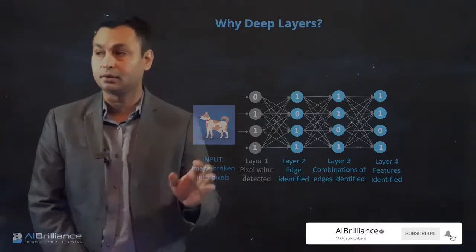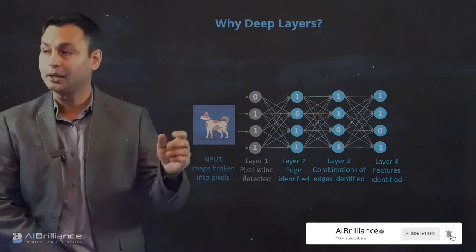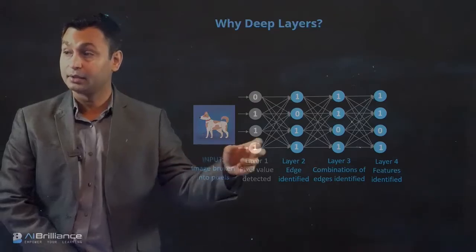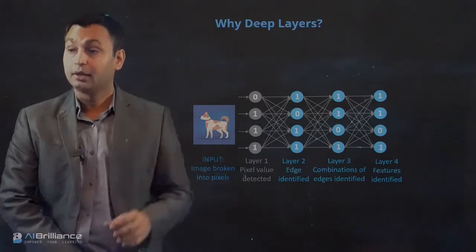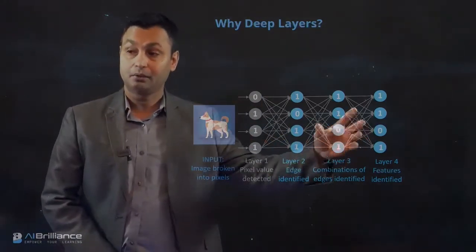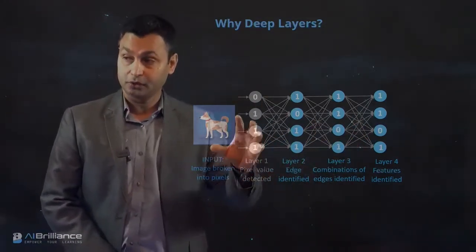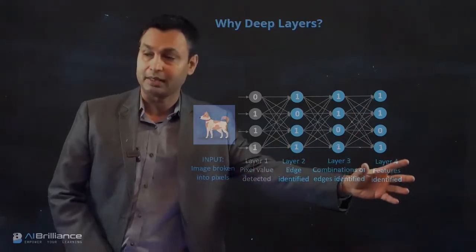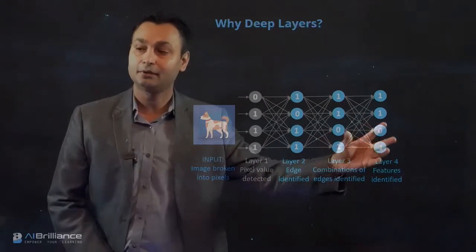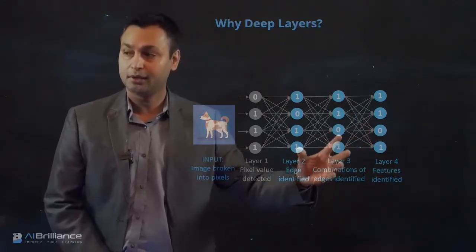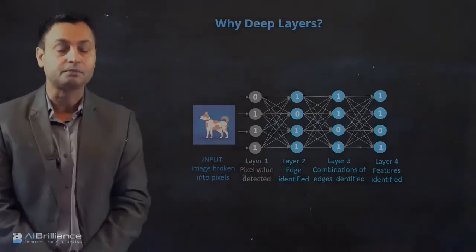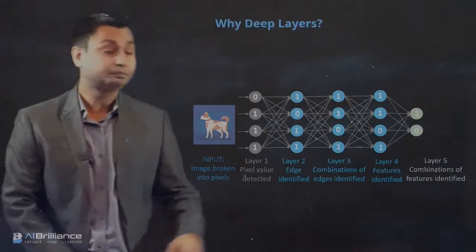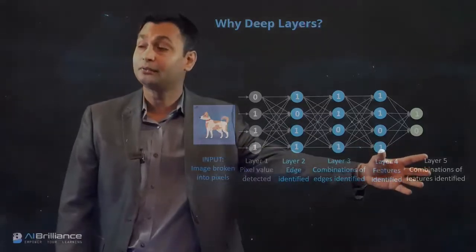At layer four, you are actually focusing on the features present in the image. The features for a dog might be the eyes, the nose, the legs, the tail. So at the fourth layer, the combination of features from previous layers — edges and other things — now starts building up to eye-level, tail-level, or leg-level information.